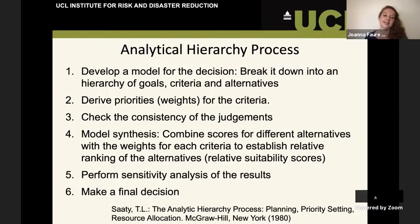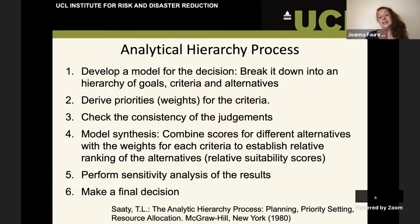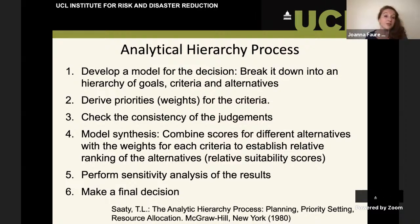We then want to check the consistency of our judgments — I'll explain that later. We then need in our model synthesis to bring together the scores for the different options with the weights of each criterion to establish the relative ranking of the alternatives. Essentially, we multiply the weights for each criterion times the score for each option, add them all up, and we've got a score for each alternative. We also want to perform sensitivity analysis on the results — what if we slightly change our scores or criteria? Would that make a difference to your decision?